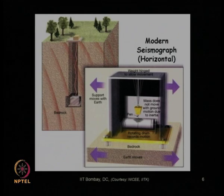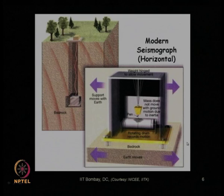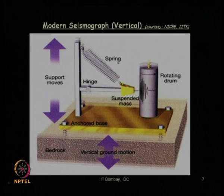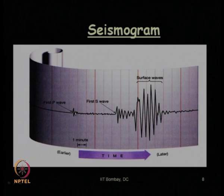In modern day seismographs, we have seen how the measurement of horizontal directional waves is done. The modern day seismograph also records the movement in the vertical direction. A seismogram records, with respect to time, the arrival time of different types of waves like P wave, S wave, and surface wave.